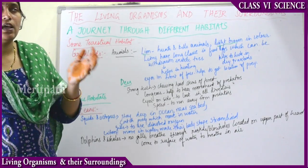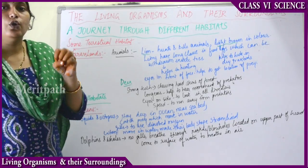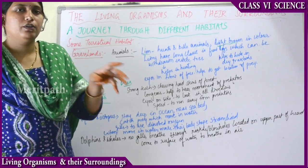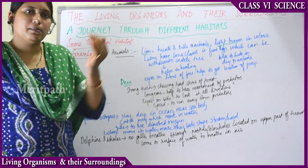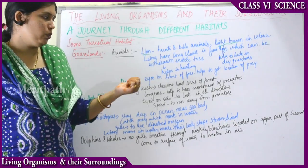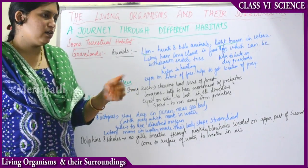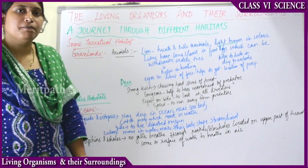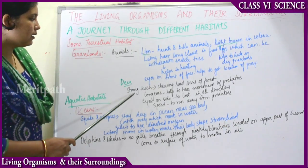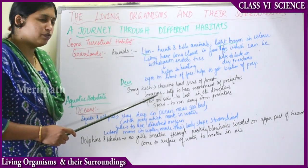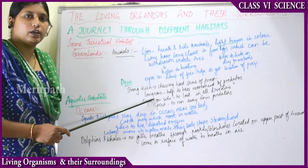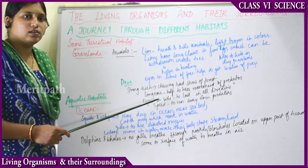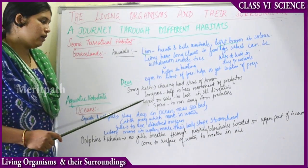The long ears help the deer detect the movement of predators. If a lion is coming to eat the deer, the deer can hear the movements of the lion's legs with the help of its long ears.